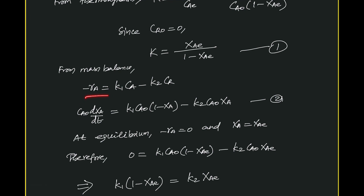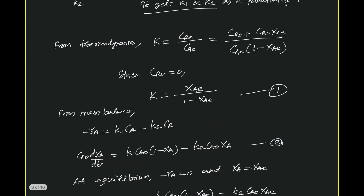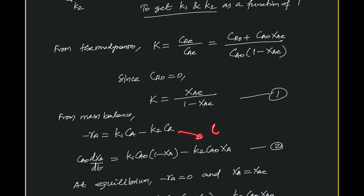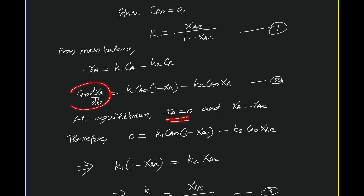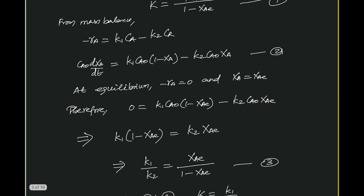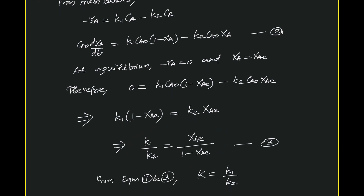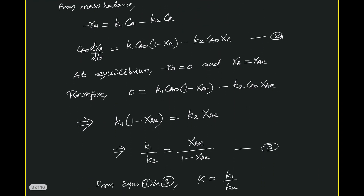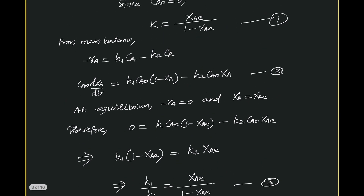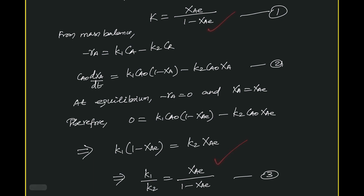From the mass balance we can write minus rA equals K1·CA minus K2·CR. We know that CR equals CA-naught times XA, since CR-naught is zero. At equilibrium this rate expression goes to zero, and XA equals XAE. This gives us the connection between K1/K2 and XAE. Matching equations 1 and 3, the right-hand sides are the same, which indicates that capital K equals K1 divided by K2.